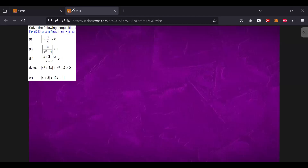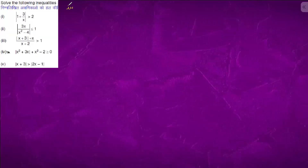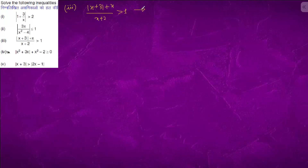We will proceed with question 3. We have |x+3| + x/(x+2) > 1. From here we can find the critical point of x+3, which is x equals minus 3.